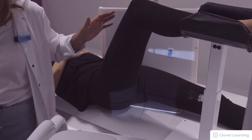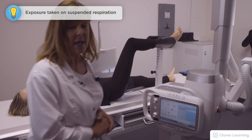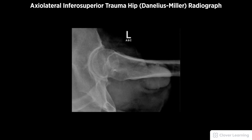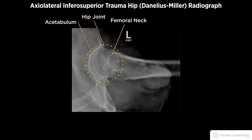A left marker indicates the left leg, the patient holds very still and holds her breath, and the exposure is made. A diagnostic axial lateral inferior-superior trauma hip Daniel-Smiller view radiograph must be free of motion. Demonstrated anatomy should include the hip joint with the acetabulum and femoral neck, free of superimposition of the greater trochanter, with proper visualization of soft tissue and bony detail.